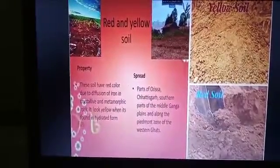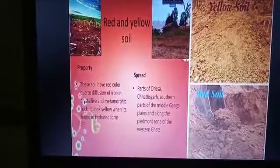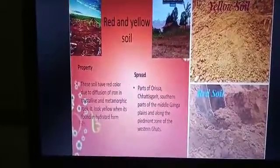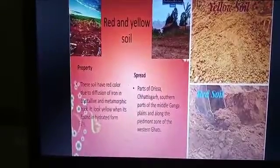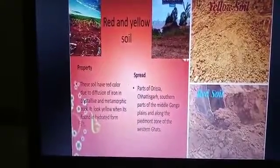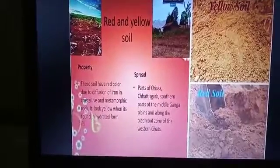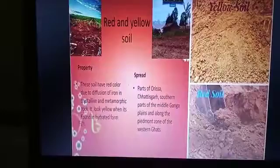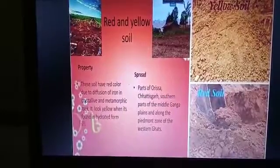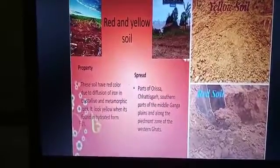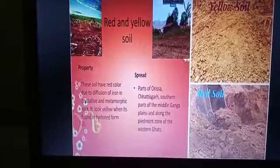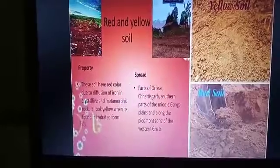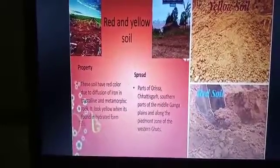Some parts of the Western Ghats also have red and yellow soil. This soil is deficient in nitrogen, organic matter, and phosphoric acid content. That is why it is less fertile, because low organic content means low fertility. The fine-grained red and yellow soils are normally fertile, whereas coarse-grained soils found in dry upland areas are poor in fertility.